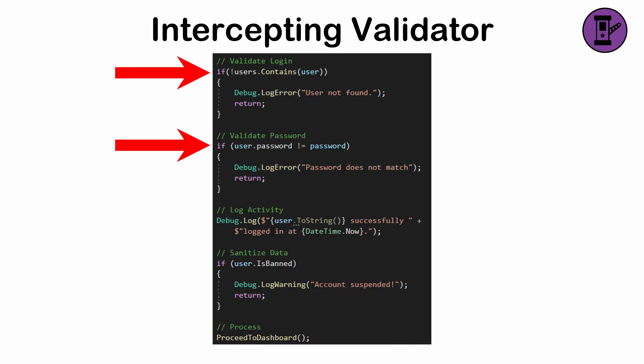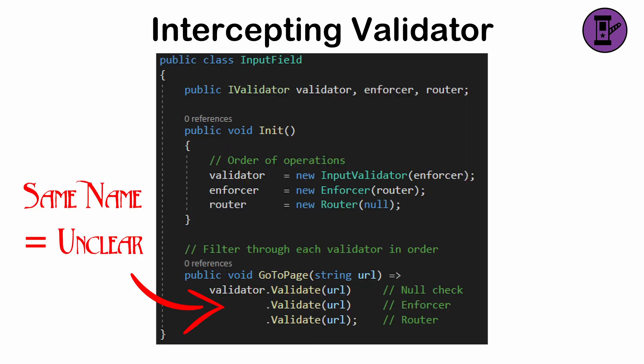For instance, an API might validate tokens, log activity, and sanitize data before processing. While flexible, overly complex chains can introduce latency or obscure the flow of control.